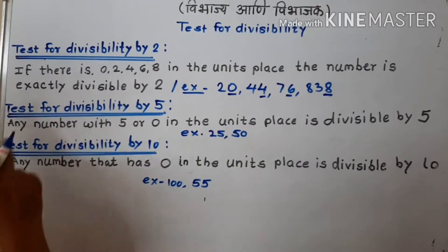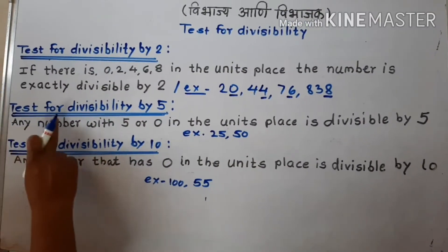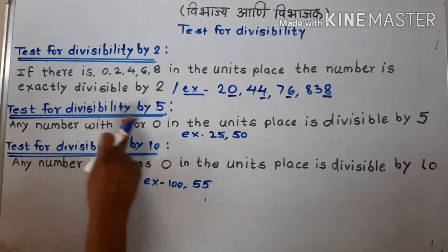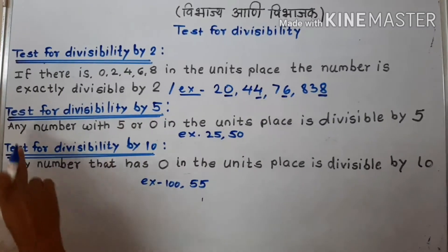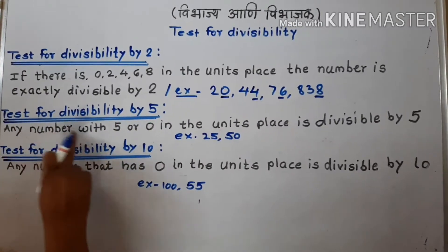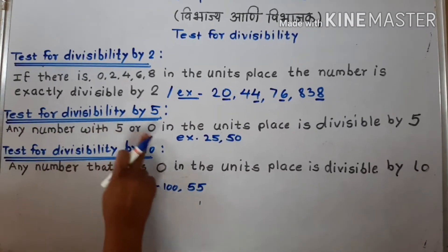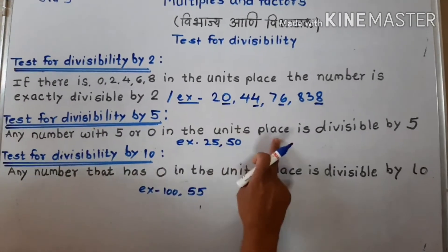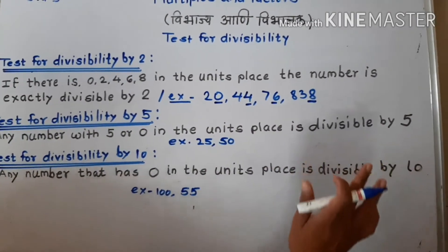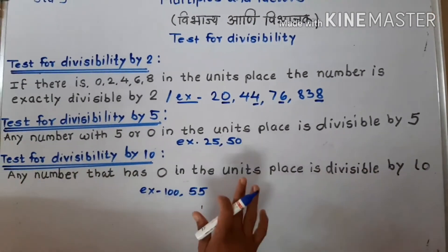Test for divisibility by 5. Any number with 5 or 0 in the unit place is divisible by 5.